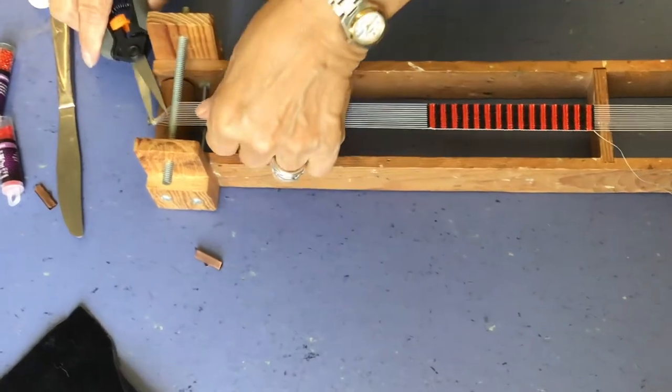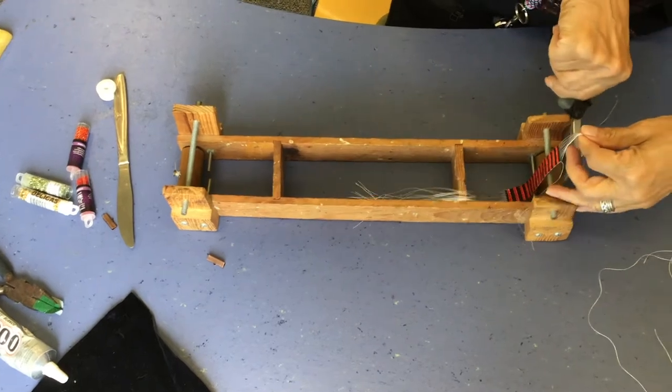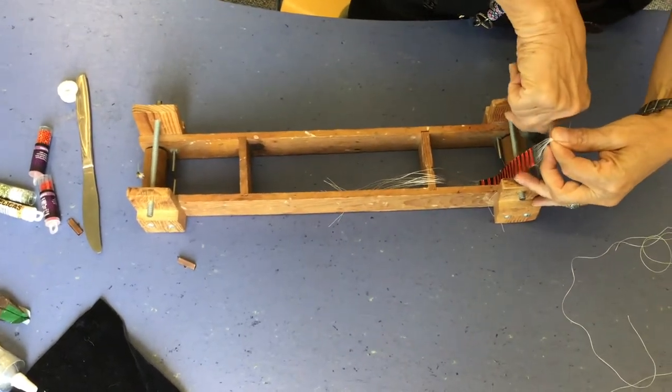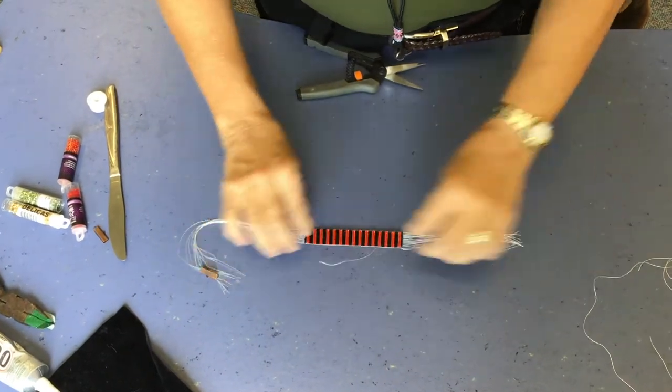As close as you can to the posts, just snip the threads. It's a little scary. Just snip them on the other end too. All right. Set them on the side. And this is what we've got.